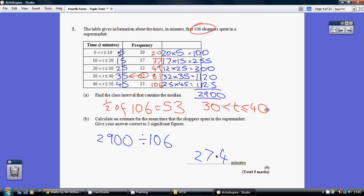So we pop in this midpoint column here, which I've done in blue. So, I'm answering part B first. From now on, it's just like we did in question 1. So, we assume those 20 shoppers spent exactly 5 minutes. Those 17 shoppers spent exactly £5.